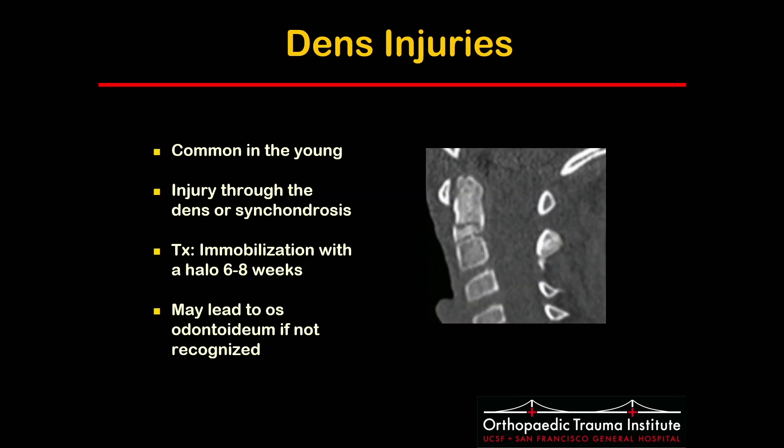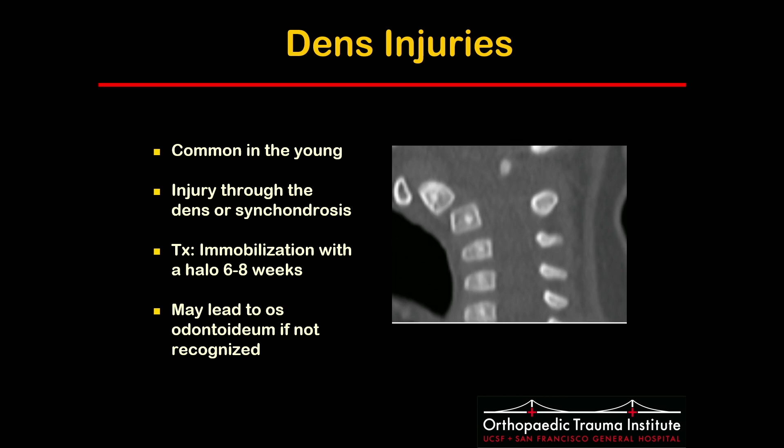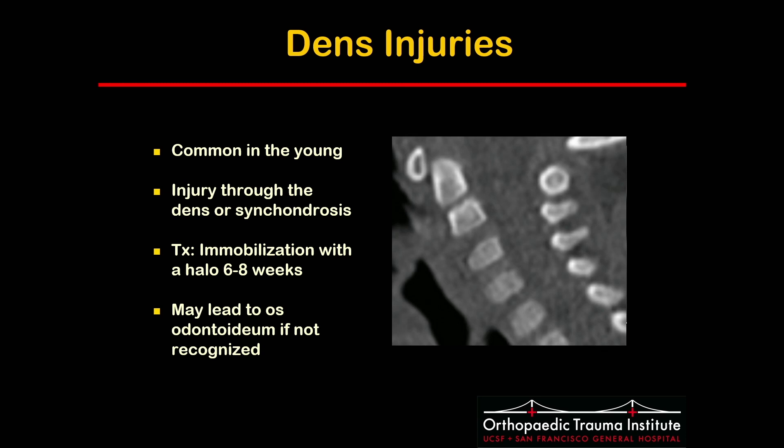Dens injuries, just like in the elderly, are also relatively common in the young. The injury could be through the dens itself or through the synchondrosis. These are generally treated with immobilization in a halo for six to eight weeks if alignment can be maintained. If these are missed, you may end up with a symptomatic os odontoideum.